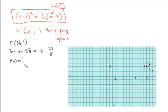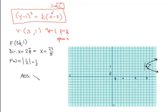The focal width = |4p| = |1/2| = 1/2. That means we go 1/4 each way from the focus — one grid mark up and one grid mark down. Connecting those points to the vertex gives our parabola. The axis of symmetry is horizontal here: y = 1, running through the focus and vertex.